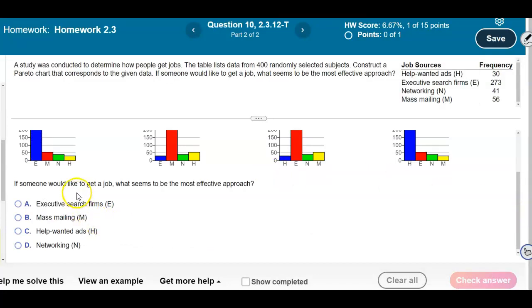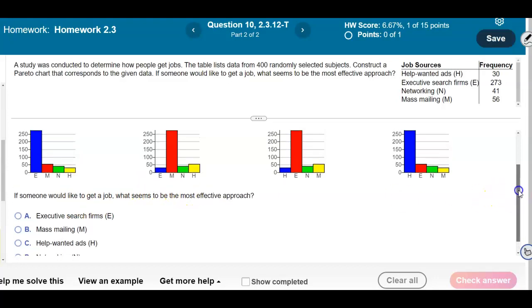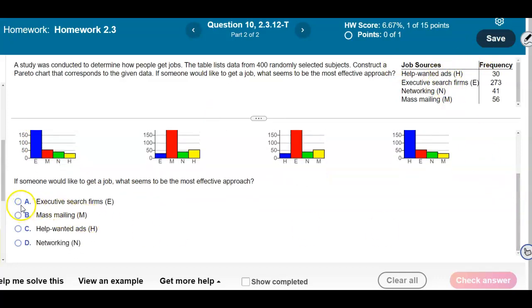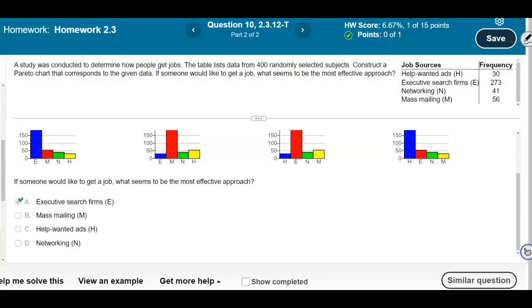Now it says, if someone would like to get a job, what seems to be the most effective approach? Well, if you look here, blue is the one that represents E, which is the executive search firms. So it looks like we're going to select that one, and therefore that is our result.